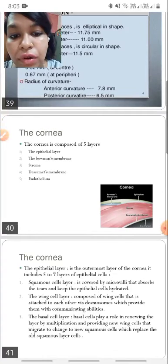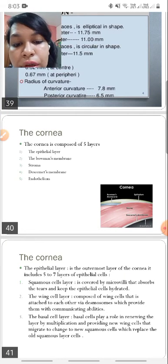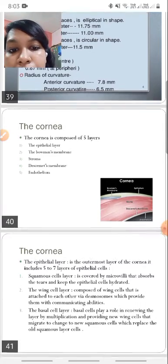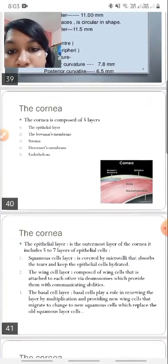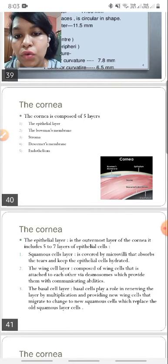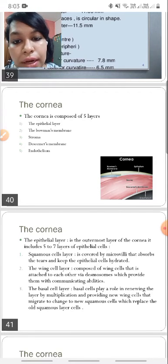Now these are the layers of cornea. This is very important and is given in exams. Firstly, from outside in, the layers are: first is the epithelial layer, then Bowman's layer, the stroma, Descemet's membrane, and the endothelium.